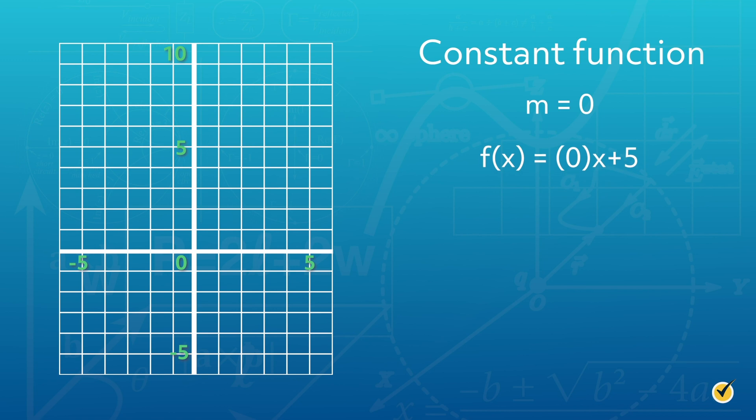Using the linear function f equals 0 times x plus 5, we quickly see that no matter what value of x is substituted into the function, our y value will be a constant, in this case equal to 5. The graph of a constant function, therefore, will be a horizontal line at y equals 5 for all values of x.